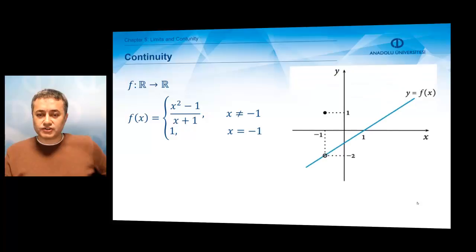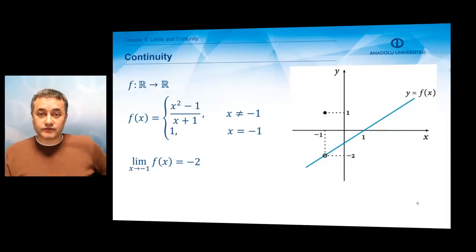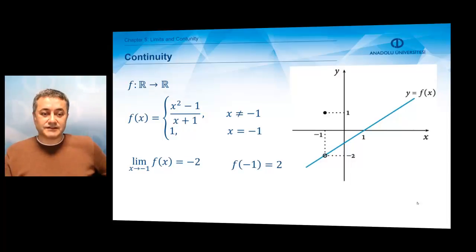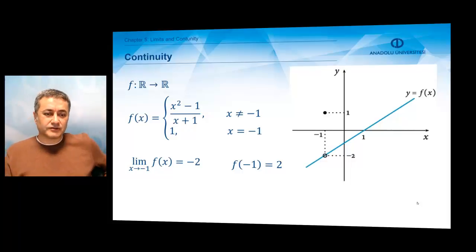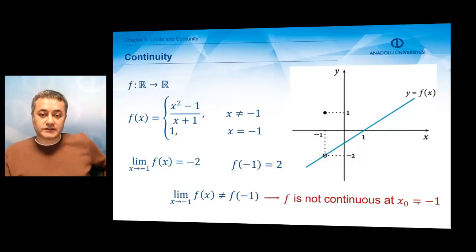Let's look at the piecewise defined function we considered at the very beginning: x squared minus 1 over x plus 1, and 1. This function is not continuous. When you look at the limit of the function at x equals minus 1, you see that the limit is minus 2. However, the value of the function is not minus 2 — the value of the function at minus 1 is 1. So the function cannot be continuous because its limiting value and its actual value are not the same at x equals minus 1.